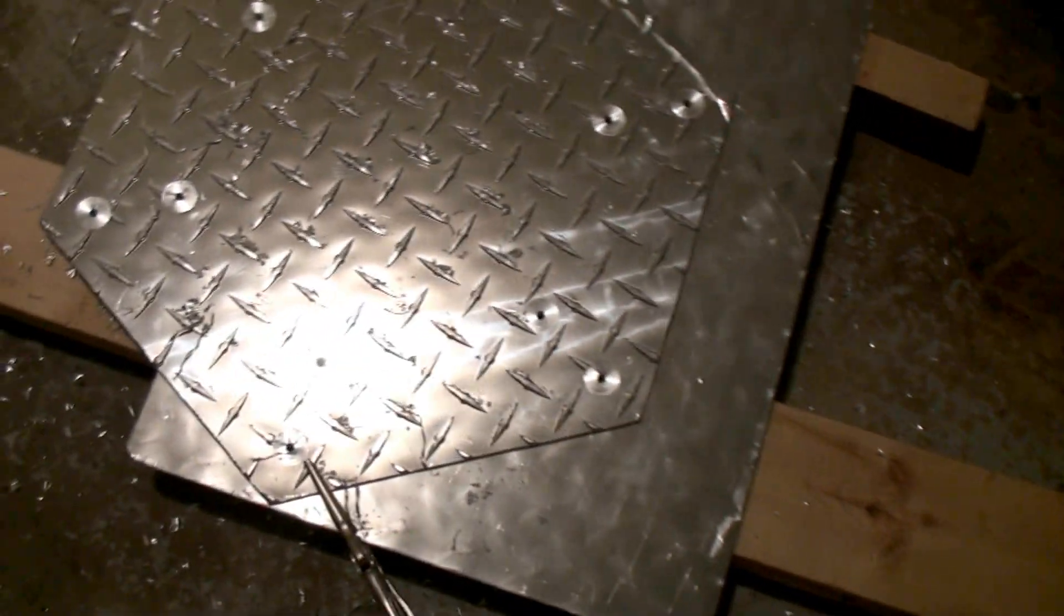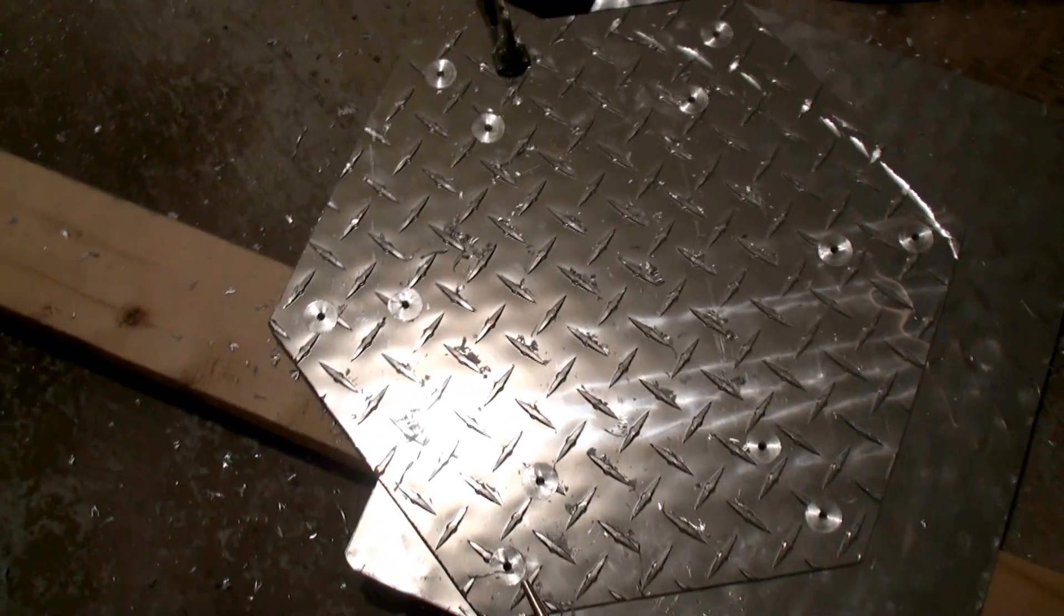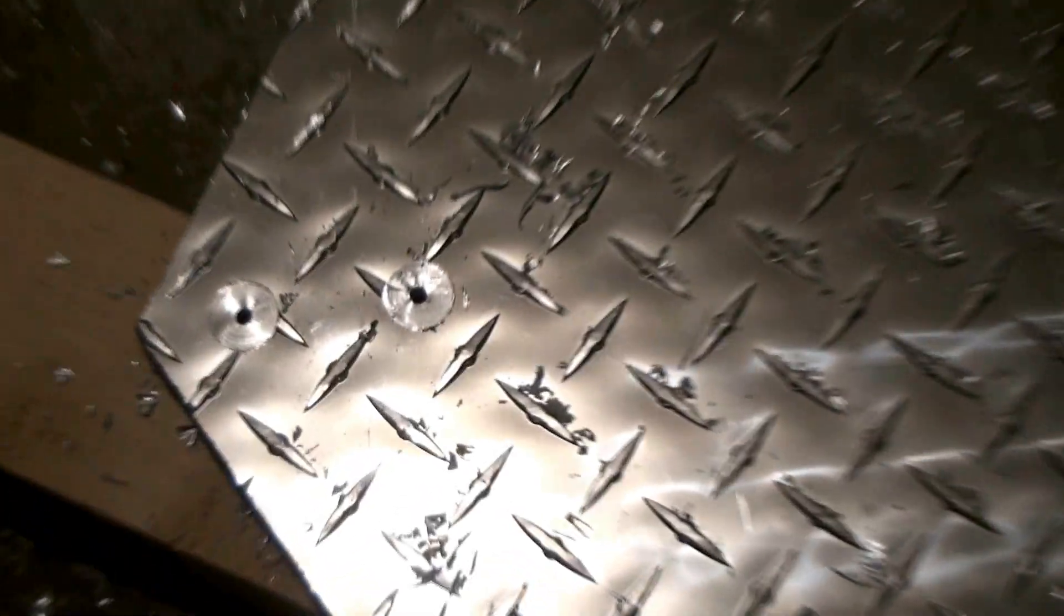Now the washers will sit down nice and flush right through the diamond plate as you can see. That's what it looks like when they've been milled down a little bit.